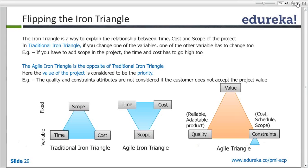In the traditional iron triangle, if you change one variable, another has to change too — for example, adding scope means time and cost go up. In the agile iron triangle, the value of the project is the priority. Value is delivered by producing a quality product while adapting to change. Cost and schedule are constraints, but we prioritize requirements to add value to the customer.